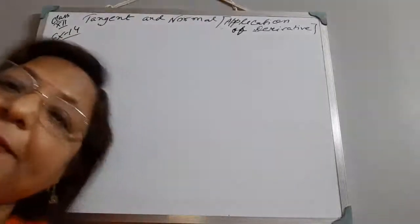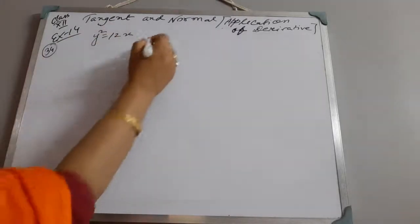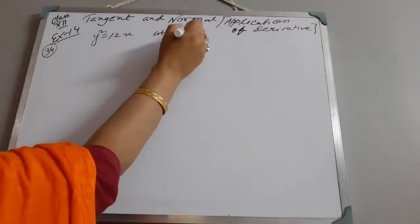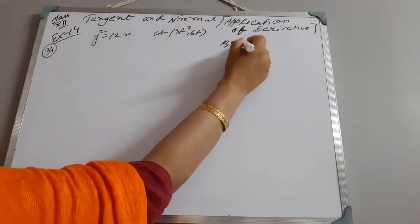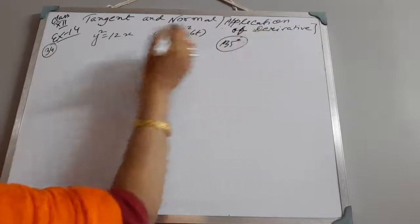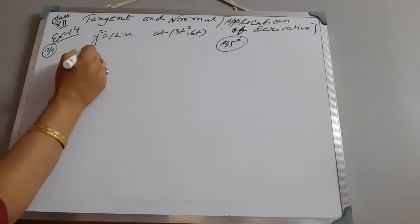Class 12, let us continue the chapter Tangent and Normal, Exercise 14. Sum number 34: find the equation of the normal to the parabola y² = 12x at point (3t², 6t). Hence, find the equation of the normal to the parabola which makes an angle of 135° with the positive direction of the x-axis. Now, y² = 12x is given.